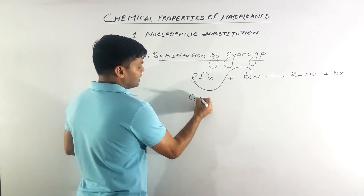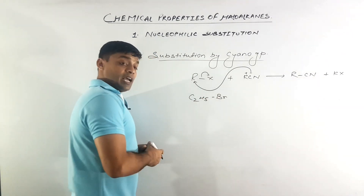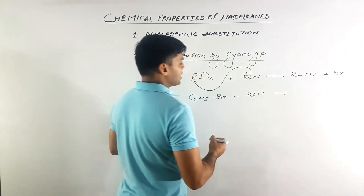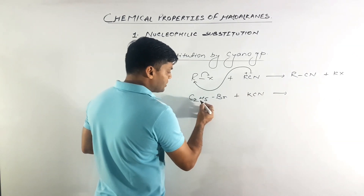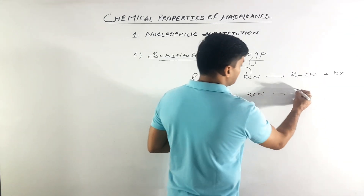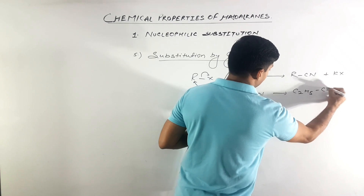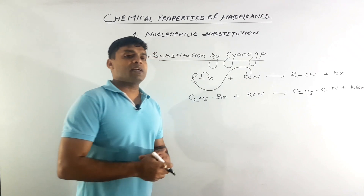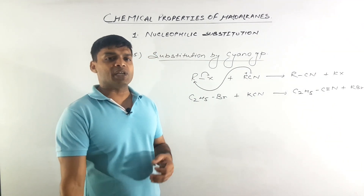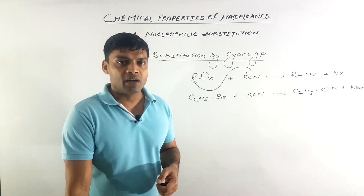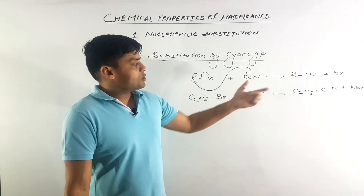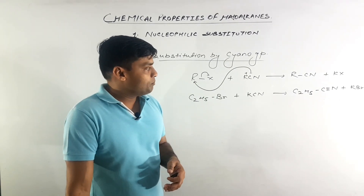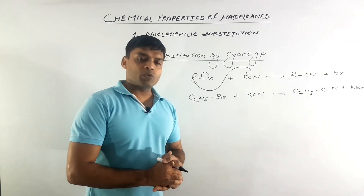For example, C₂H₅Br (ethyl bromide) treated with potassium cyanide — the CN⁻ attacks over the ethyl group, the Br is substituted, and this results in the formation of C₂H₅CN plus KBr. This is a step-up reaction. This reaction leads to the formation of propanenitrile.